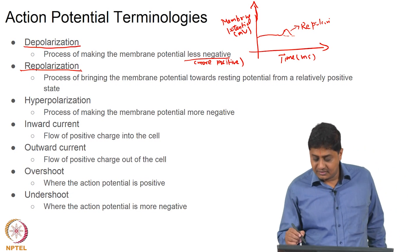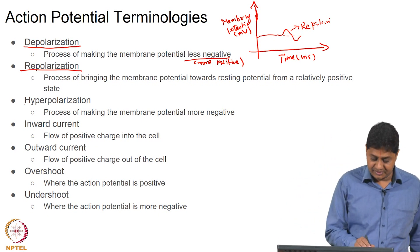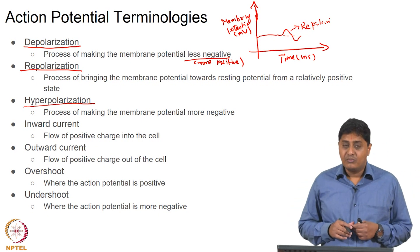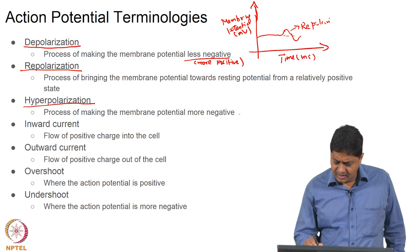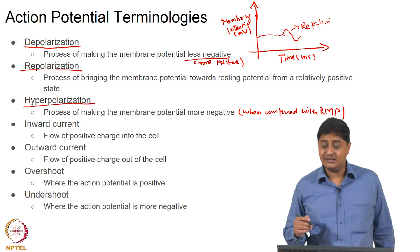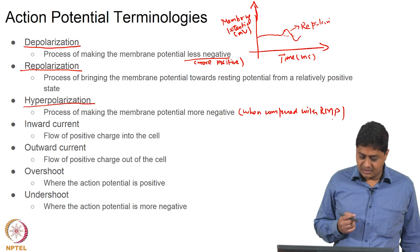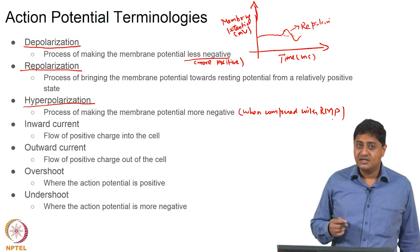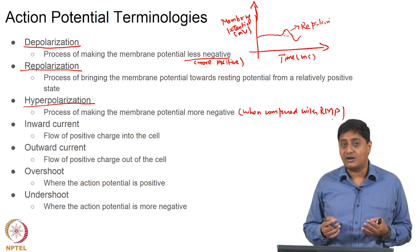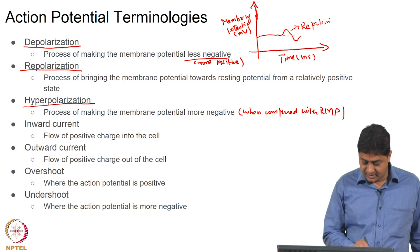If you make the membrane potential go lower than the resting membrane potential, that is called hyperpolarization — the process of making the membrane potential more negative when compared with the resting membrane potential. If a lot of positive charge flows into the cell, the membrane potential becomes less negative or more positive. The flow of positive charge into the cell is called an inward current.